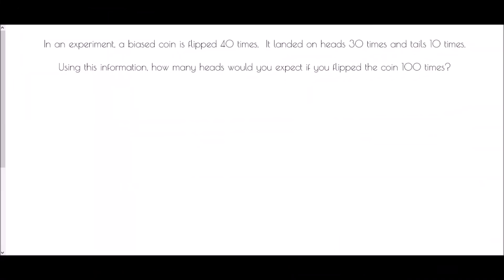So next we have an experiment where a biased coin is flipped 40 times. Now first of all, the word biased means that it is not fair. A biased coin means that it has been weighted in some way so that one side is more likely than the other. In this case, when we flip that coin 40 times, we got 30 heads and 10 tails, so obviously it's been weighted towards heads more than tails.